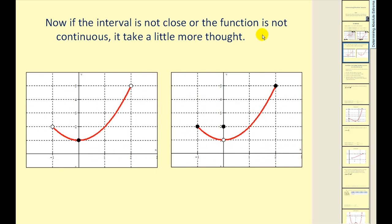If the interval is not closed or the function is not continuous, it takes a little more thought to determine absolute extrema. This point down here is an obvious low point, therefore the y value of that point would be the absolute min. However, we do not have an absolute maximum up here because we are looking at an open interval, therefore there is no absolute max. Similarly, over here we can see that this y value would represent the absolute max. However, down here, what seems to be a low point at x equals zero is a point of discontinuity, therefore there is no absolute minimum on this interval.